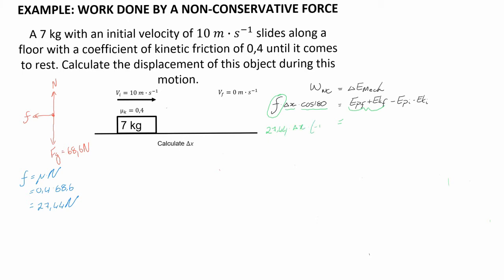The final potential energy just like the initial potential, because this object has not changed its height relative to the ground, is going to be zero. The final kinetic energy is also zero because this object comes to rest as stated in the question.